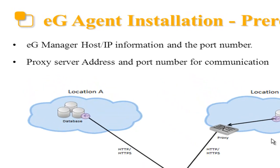Before we start the installation, we need to gather two required pieces of basic information. First, we need to know the eG manager IP or the hostname and the port number for communication. I'm going to use egontap.eginnovations.com and the port number is 80 for this installation.